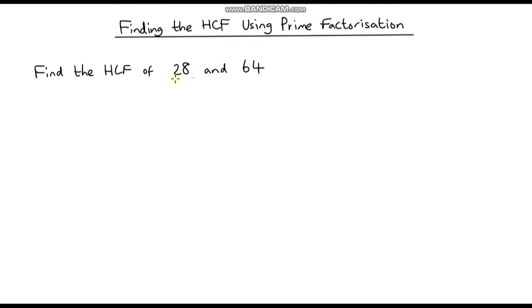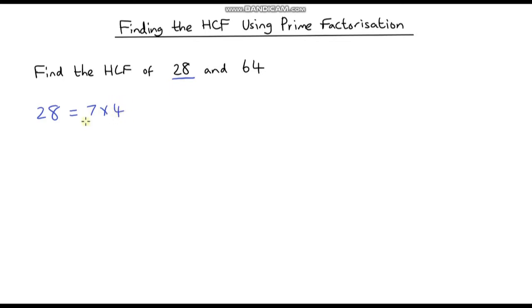To break a number down into the product of its prime factors, let's start with 28. I know that 28 is the same as 7 times 4. We can break this down even further — we can't break 7 down anymore because it's a prime number, but we can break 4 down.